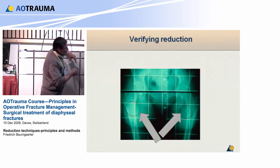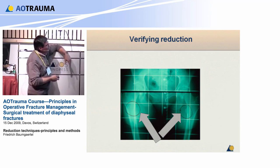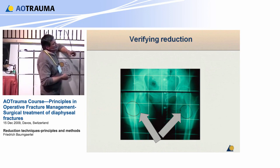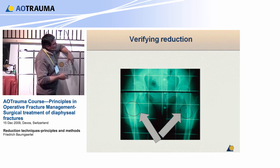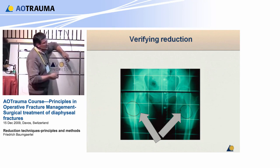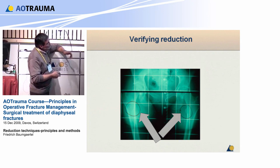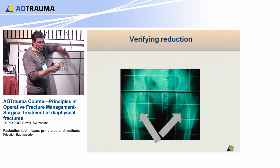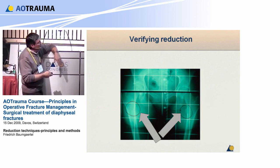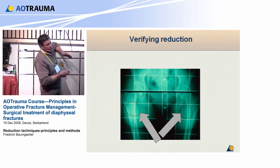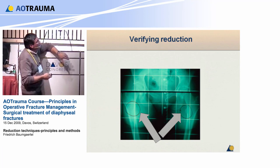What about verifying rotation? Once you get your nail in — even before — use landmarks you can see with the C-arm. Here you see the lesser trochanter on the left side, but you cannot see the lesser trochanter on the other side. What would this mean? It means that leg is externally rotated. If you know both knees are parallel and you cannot see your lesser trochanter, you must have an external rotation that you need to correct.